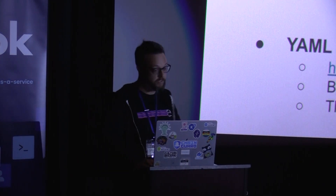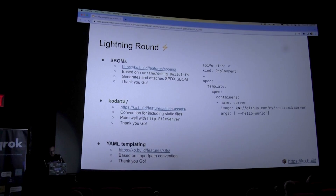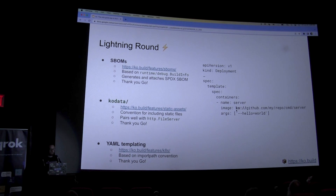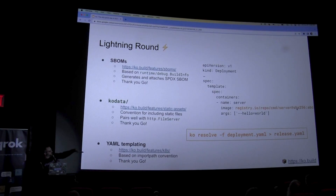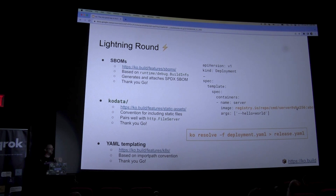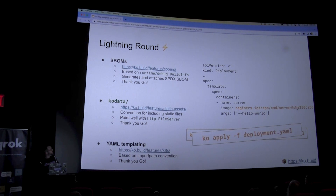A really exciting thing Ko does is very simple YAML templating. You might think 'oh no, YAML templating, this is going to suck' — but how it works is: if you have some YAML and a value in that YAML has 'ko://some/import/path', Ko says 'this looks like an import path — I will find it, go build it, put it into a container image like I do.' Then when you run ko resolve, it does all that and outputs that same YAML but with the built image reference in place of your import path. It doesn't do anything more complicated than that. There are no for loops, no ifs — if you want that, go somewhere else.